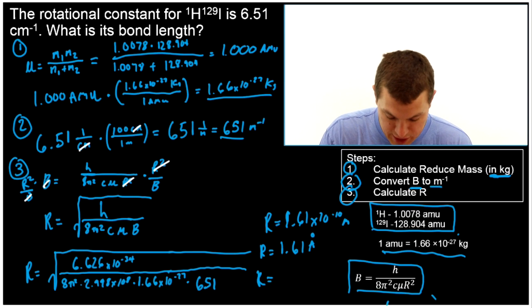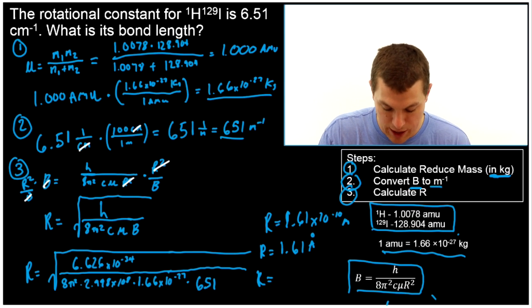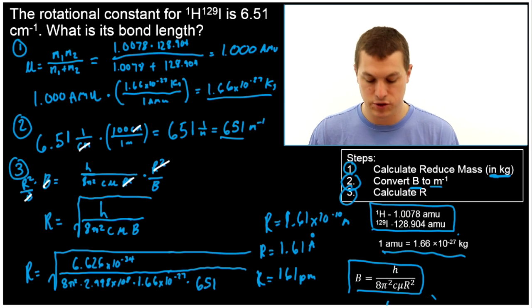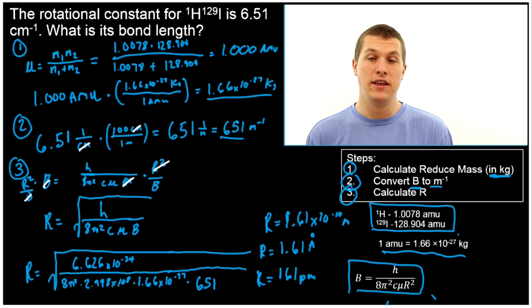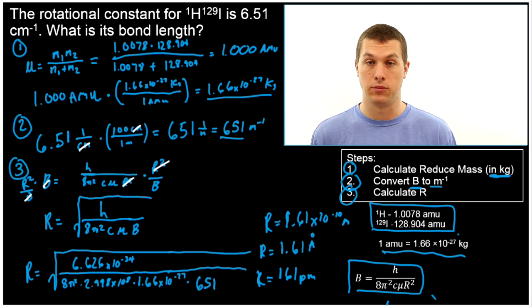What you should expect to get here is something around an angstrom for most of your bond lengths. It's also common to put that into picometers, which would just be multiplying our top answer by 10¹², which would mean this was 161 picometers. And this is about the size you should expect for a bond length for a diatomic molecule.